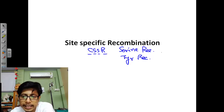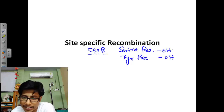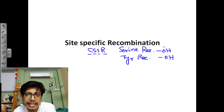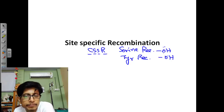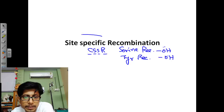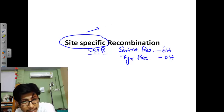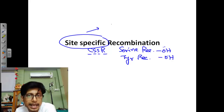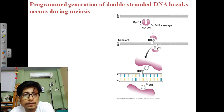Both serine and tyrosine carry a hydroxyl group in the side chain of the amino acid, and that hydroxyl group acts as a nucleophile to attack and create a break in the double-stranded DNA, which can then be used for recombination. Site-specific recombination is very specific — it targets a particular DNA sequence. A specific sequence is recognized by the enzyme, which then makes a cleavage there. This is an overview of how the process works.